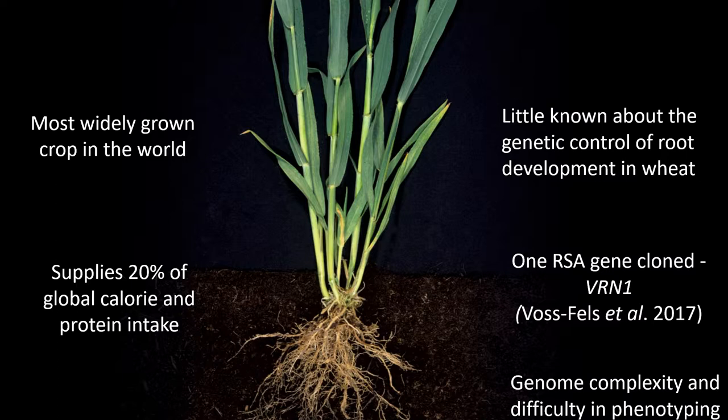But much like this picture, we don't really know much about the roots of wheat. We only know mostly about the shoot, and up until now only one gene controlling root architecture in wheat has been identified — that is by Van Wan in Lee Iki's lab. I believe he has a poster, poster number 49 on that, so you can find more information there.